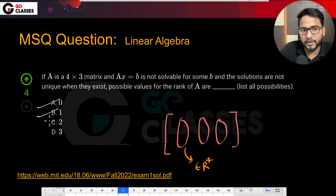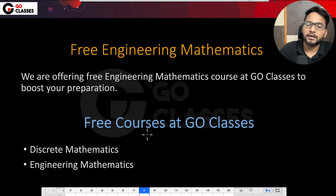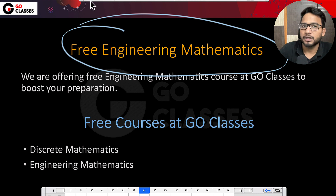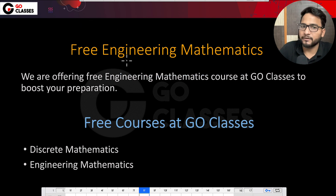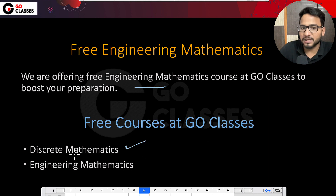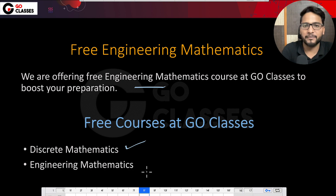The answer is A, B, and C — that is, rank 0, 1, and 2. I hope you understood this question. Thank you for watching. At GO Classes we are offering complete Engineering Mathematics as a free course, along with a Discrete Mathematics course. You can check out those videos — I'm 100% sure you will like them. Thank you, take care, bye bye.